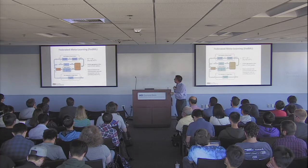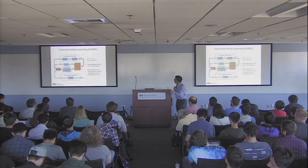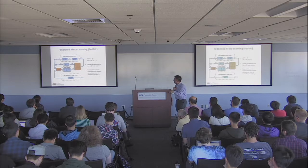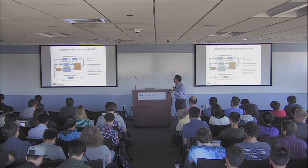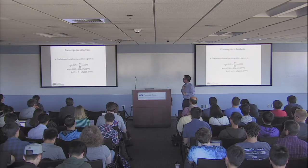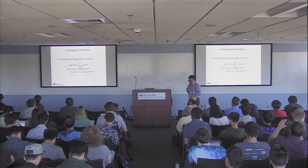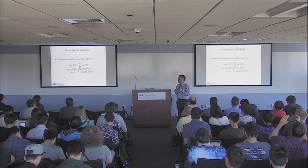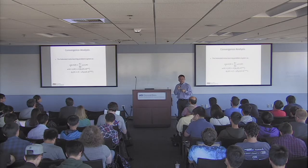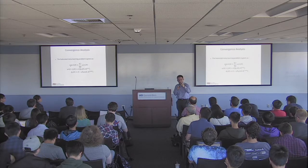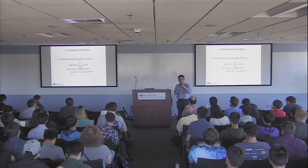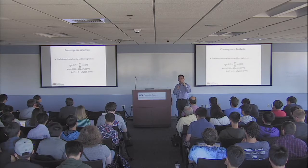Once meta training is finished, we can apply the pre-trained model at the target node for fast adaptation. For this algorithm, we look at convergence behavior — how fast it converges — and the fast adaptation performance. These are the two key questions for our federated meta learning algorithm.